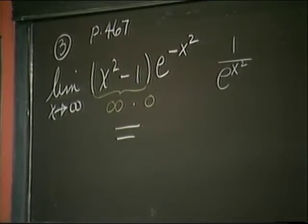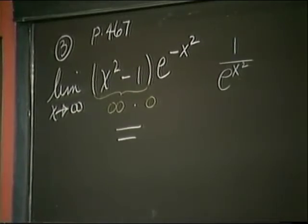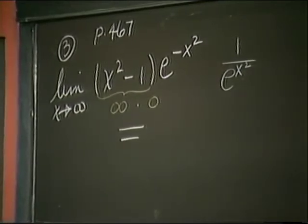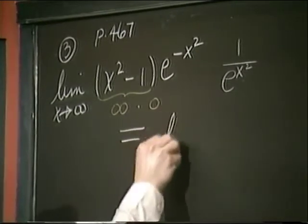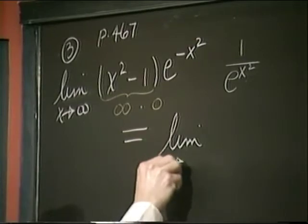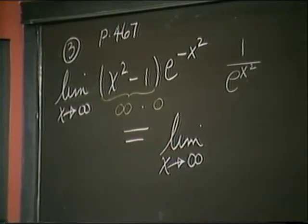So as an infinity times 0 form, we've seen many times over that we should, let's say, move something to the denominator to make it 0 over 0. This is a nice problem, because in the past, I think I personally have said,